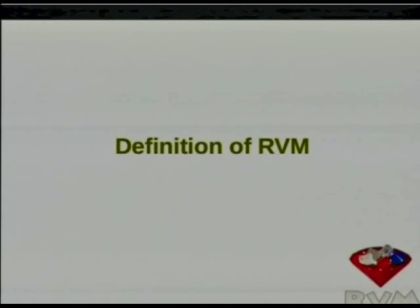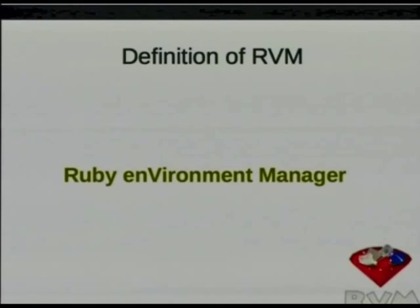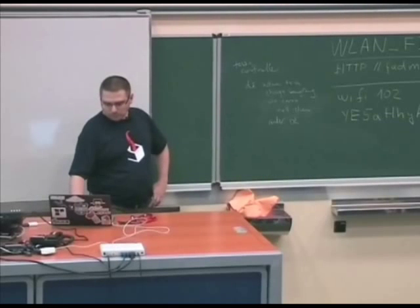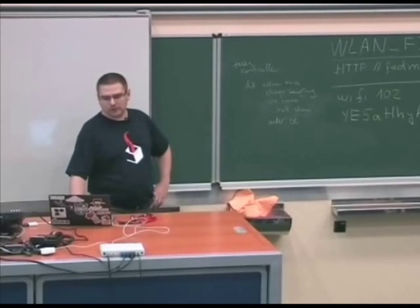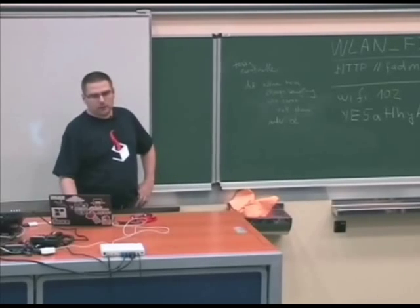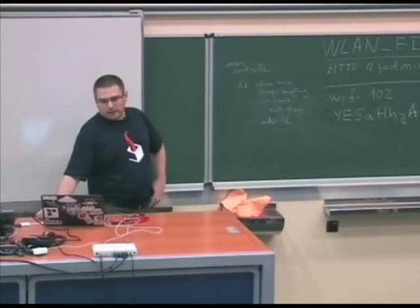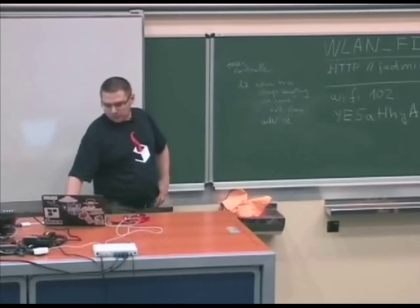Let's start with the definition of RVM. RVM is Ruby Environment Manager — you can basically switch between different versions of Ruby and different sets of your environment. RVM provides the possibility to install many different Rubies: the basic ones, and also those that are less known, like IronRuby and MacRuby.